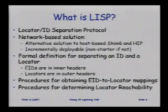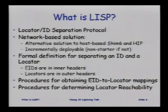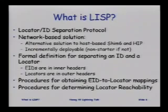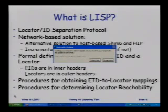LISP stands for Locator ID Separation Protocol. This is going to be a network-based solution — there are host-based solutions that already exist; SHIM6 and HIP are examples. We want a network-based solution because we want to incrementally deploy it, changing as few routers in the Internet as possible. Special boxes will be able to help in splitting the locator and ID. If it's not incrementally deployable, it's a non-starter — this is partly why SHIM6 and HIP have not been deployed after six to eight years.